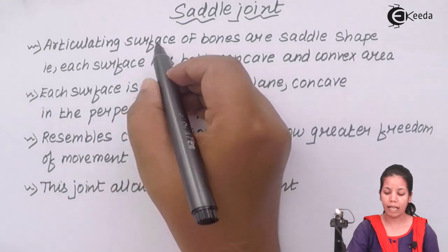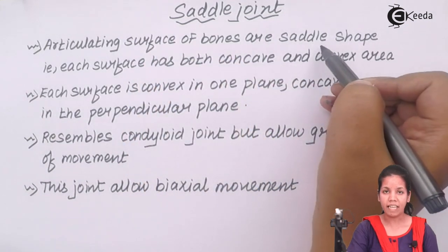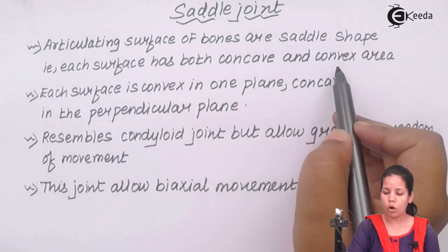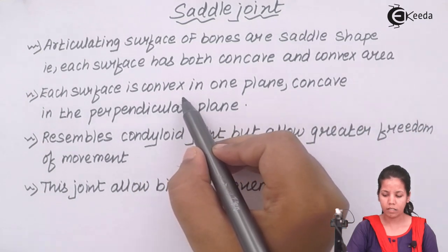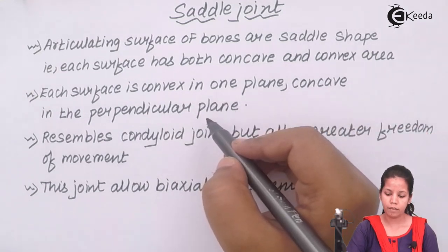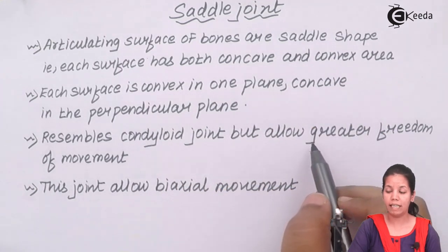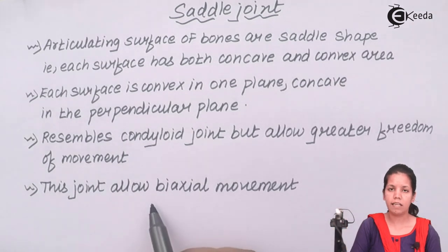In saddle joints, the articulating surface of one of the bones is precisely of saddle shape, and each surface has both concave as well as convex areas, similar to mirrors. Each surface is convex in one plane and concave in the perpendicular plane. This resembles condyloid joints in some manner, but allows greater freedom of movement, or greater degree of movement. These joints precisely allow biaxial movement wherever they are present.